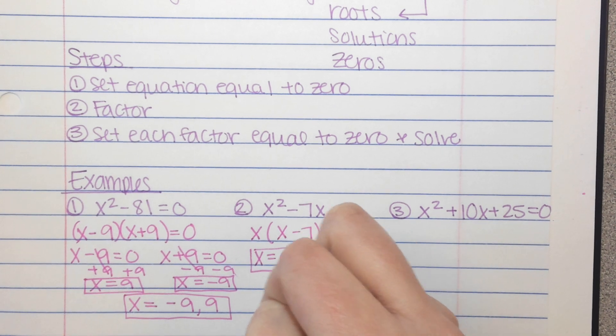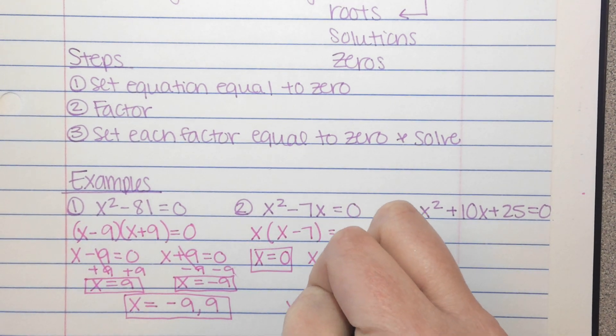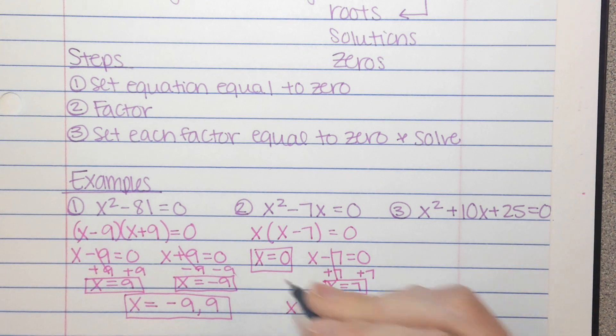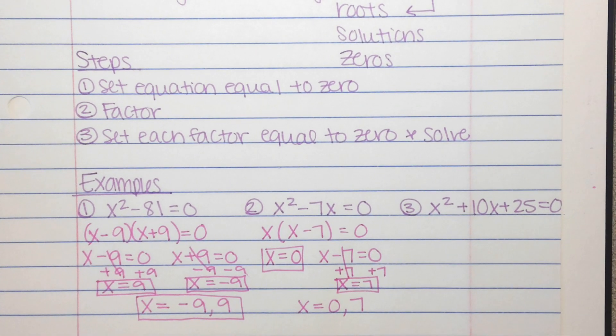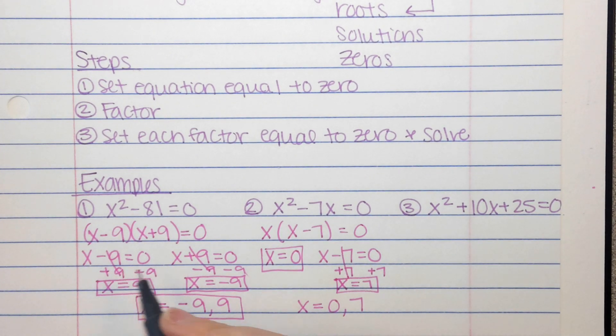And again, in Math Excel, it wants you to do x equals 0 comma 7. So very similar to what we've been doing. We're just adding this extra step where we set the factors equal to 0 and solve.